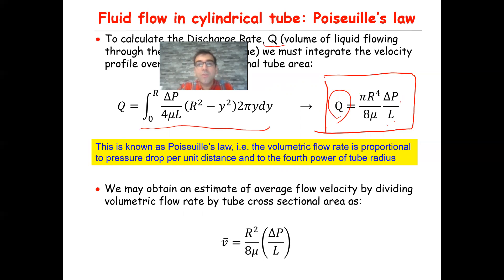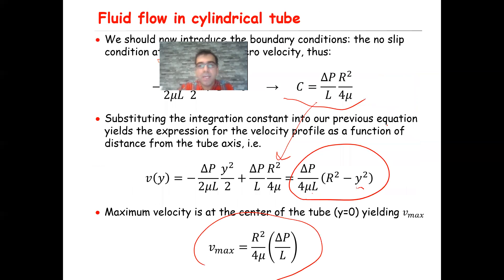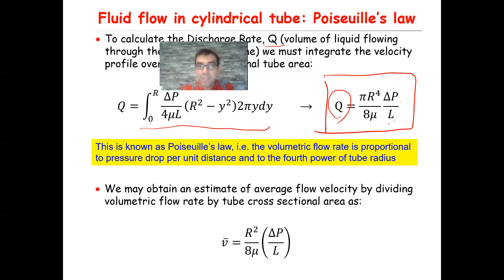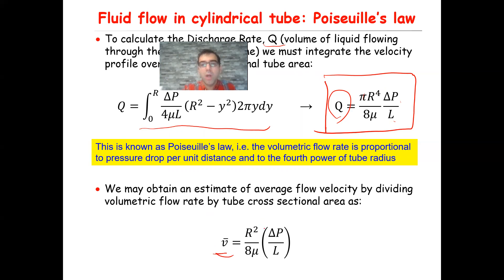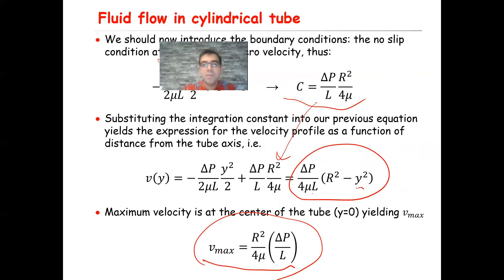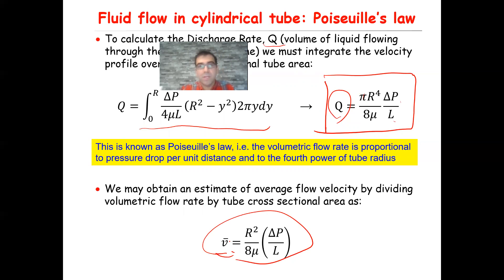Sometimes we like to work with the average velocity through this cylindrical tube. For that, you divide the volumetric flow rate Q by the cross-sectional area pi·R², which gives the average velocity equal to R²/(8·mu) times delta P/L. Comparing this with the maximum velocity, you see the maximum velocity is two times bigger than the average velocity.